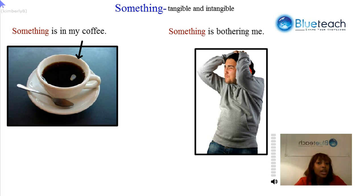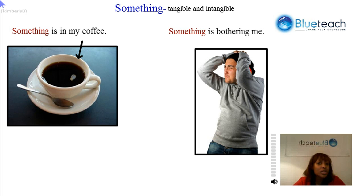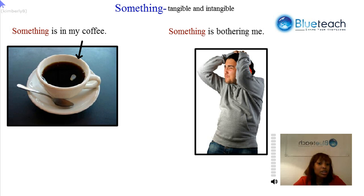We can use 'something' to talk about both tangible and intangible things. 'Something is in my coffee' means we know there's an object in our coffee but we don't know what it is — there's some thing floating around. Or we can use it for something intangible, like an idea or concept we can't actually see: 'something is bothering me.' We don't know what is bothering this person — it could be a headache, losing his cat, stubbing his toe, a fight with his boss, getting fired. Something is bothering him, but we don't know what it is, yet we know that it is there.